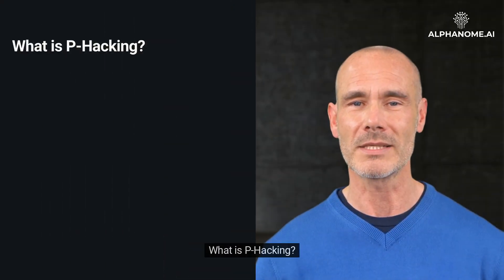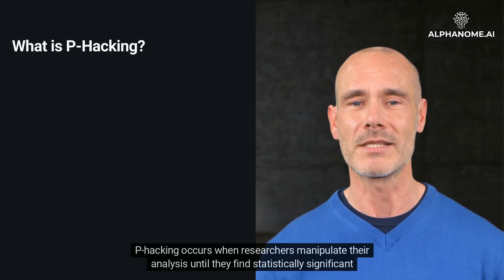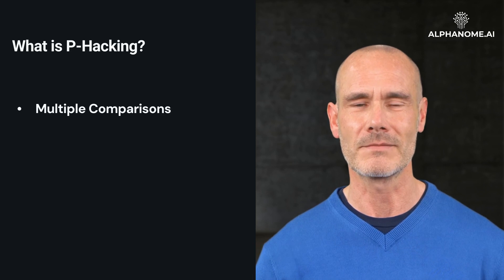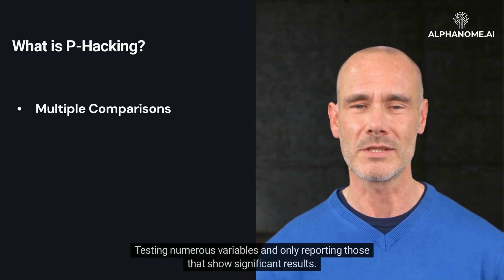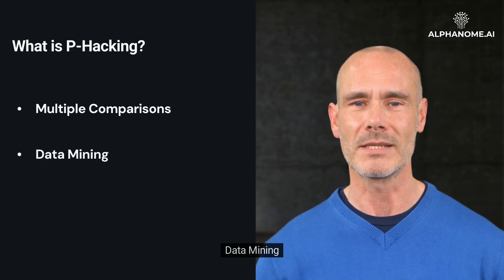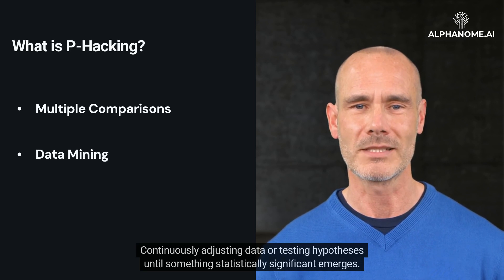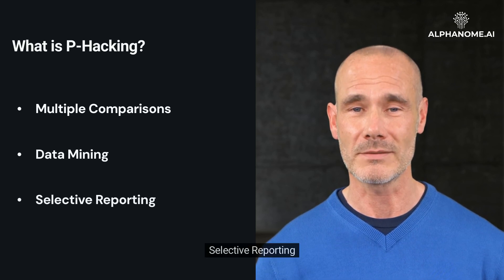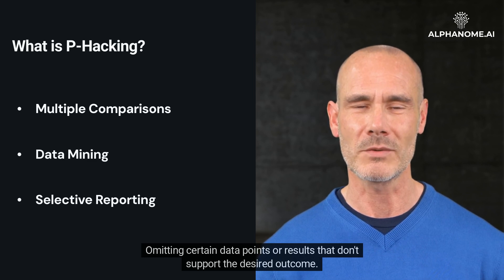P-Hacking occurs when researchers manipulate their analysis until they find statistically significant outcomes. This process often involves multiple comparisons — testing numerous variables and only reporting those that show significant results — as well as data mining, continuously adjusting data or testing hypotheses until something statistically significant emerges, and selective reporting: omitting certain data points or results that don't support the desired outcome.